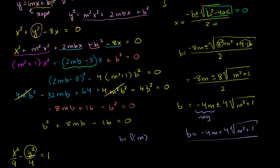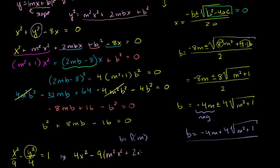So we can rewrite this same thing. I'm going to multiply both sides of this equation by 36 — the common multiple of 9 and 4 — so that I can get rid of these fractions. So this is going to become: 36 divided by 9 is 4, so it's 4x squared, minus 36 divided by 4 is 9. And instead of y squared, we know that y squared is the same thing as m squared x squared plus 2mbx plus b squared.